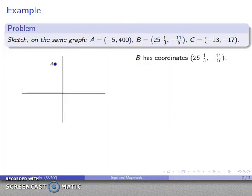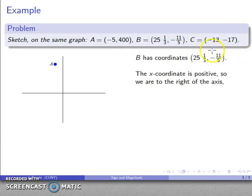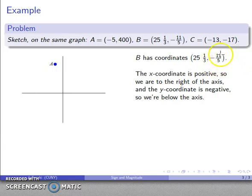Well, what about the other point, 25 and 1/3, negative 11/5? Well, we'll run the same sort of sign and magnitude analysis. So the x-coordinate is positive, so I'm going to be someplace to the right of the axis. The y-coordinate is negative, so I'm going to be below the x-axis.